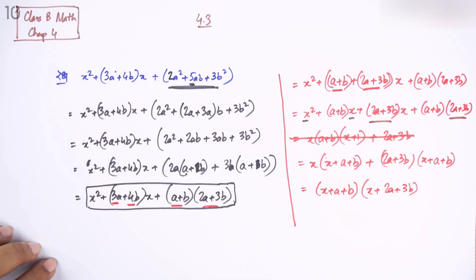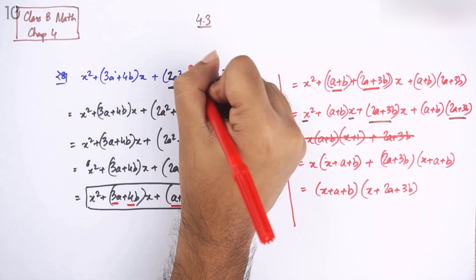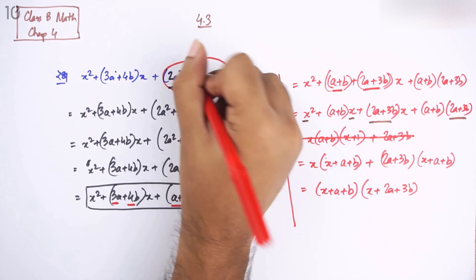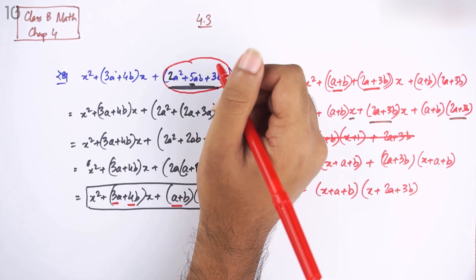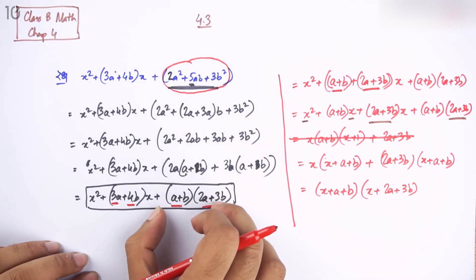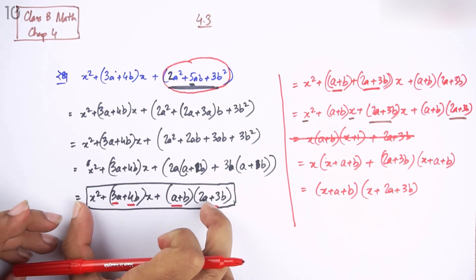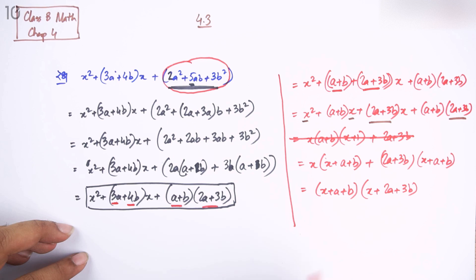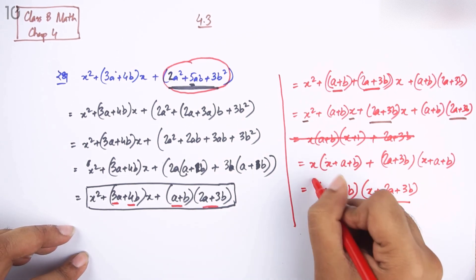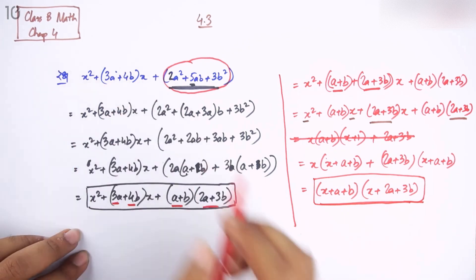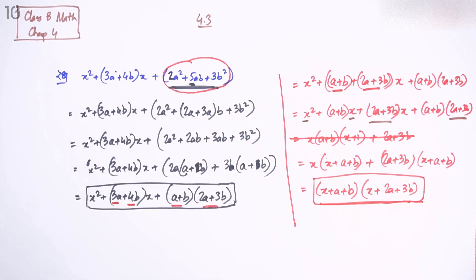Here we have x plus a plus b into x plus twice a plus twice b. So we have successfully completed the factorization of this large expression. Here we used the middle-term method — by grouping two terms at a time in the first step, we factored the entire expression completely.